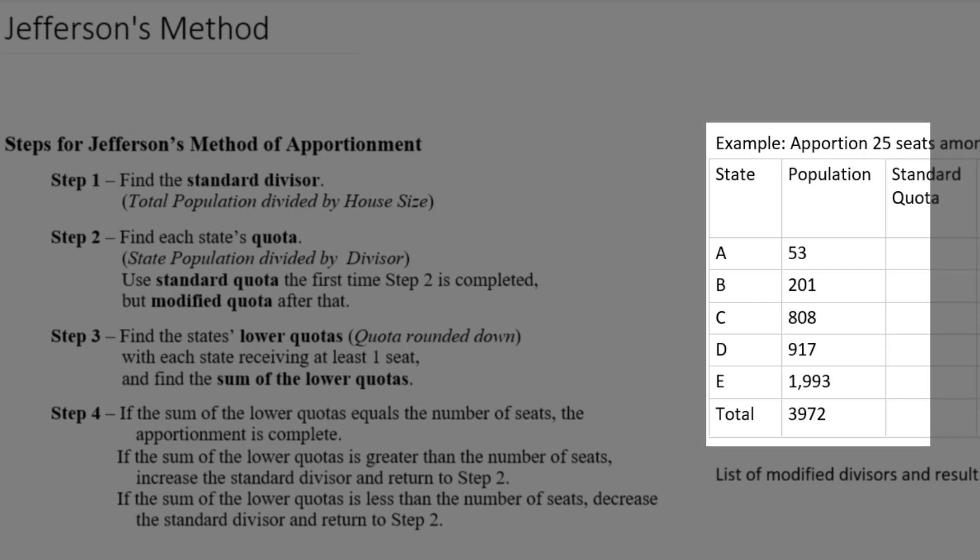State A has 53 people, State B has 201, State C has 808, State D has 911, and State E has 1,993 for a total population of 3,972.